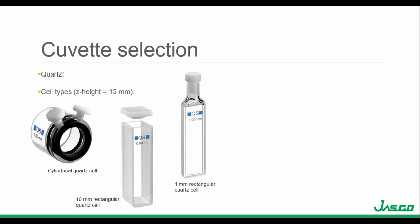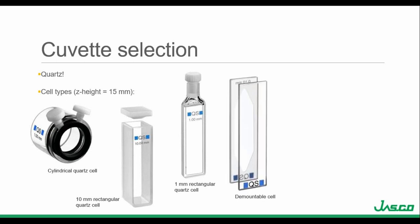Aside from path length selection, the cuvette material and volume are also important parameters for circular dichroism experiments. Quartz cuvettes are necessary for CD measurements due to their transparency in the far UV and because they typically have little to no birefringence, which can lead to artifacts. The standard cuvette has either a 1mm or 10mm path length and can be rectangular or cylindrical. Demountable cells are used when shorter path lengths are beneficial for reducing overall absorbance. They hold smaller volumes but can't be used for temperature-dependent studies because they're not completely sealed.